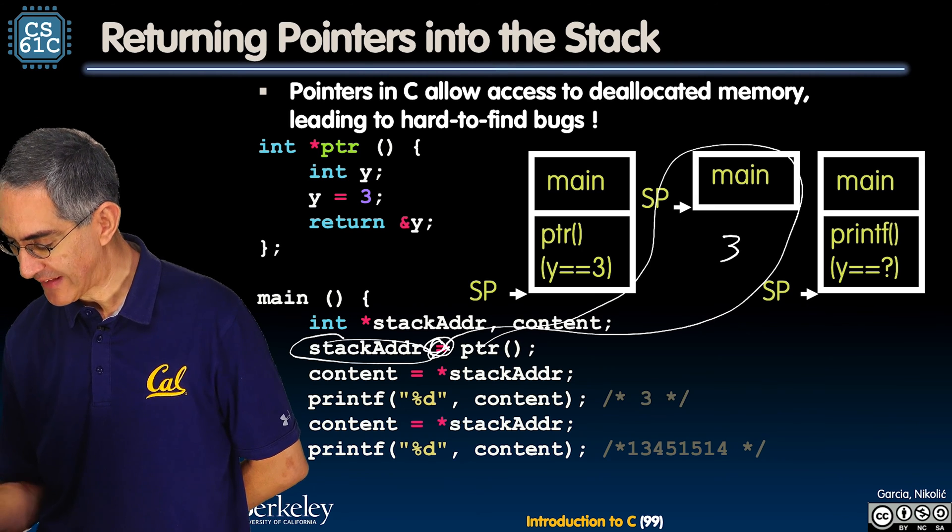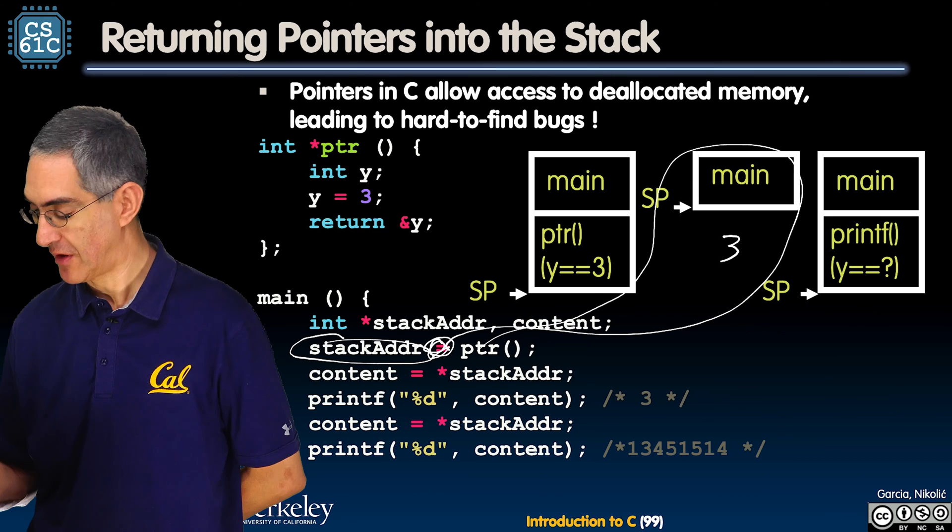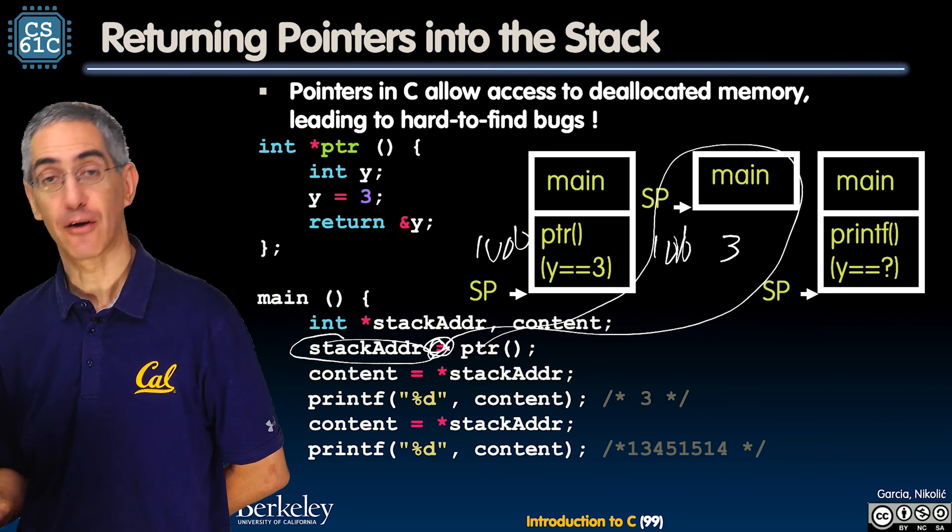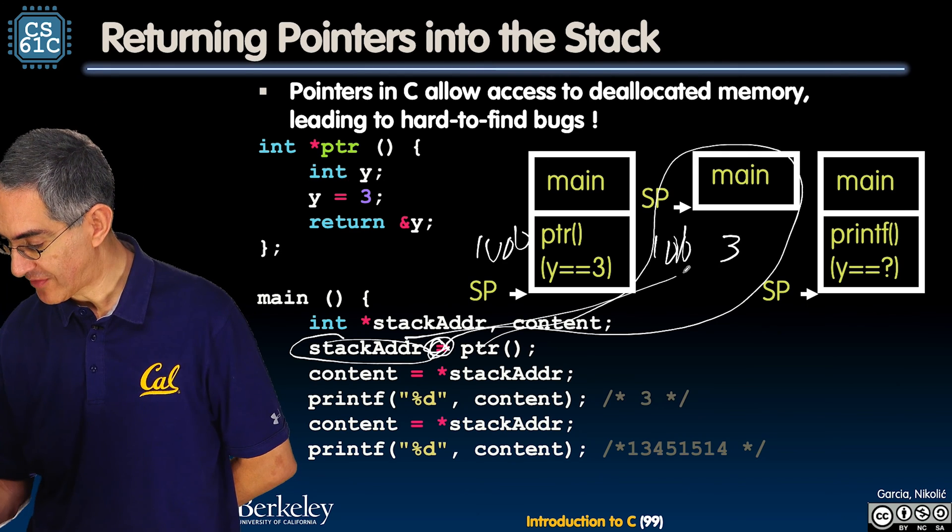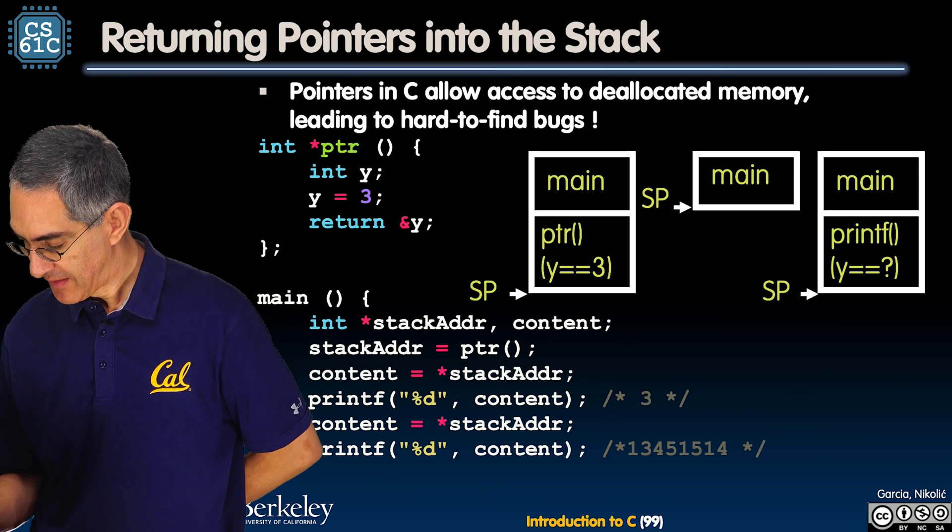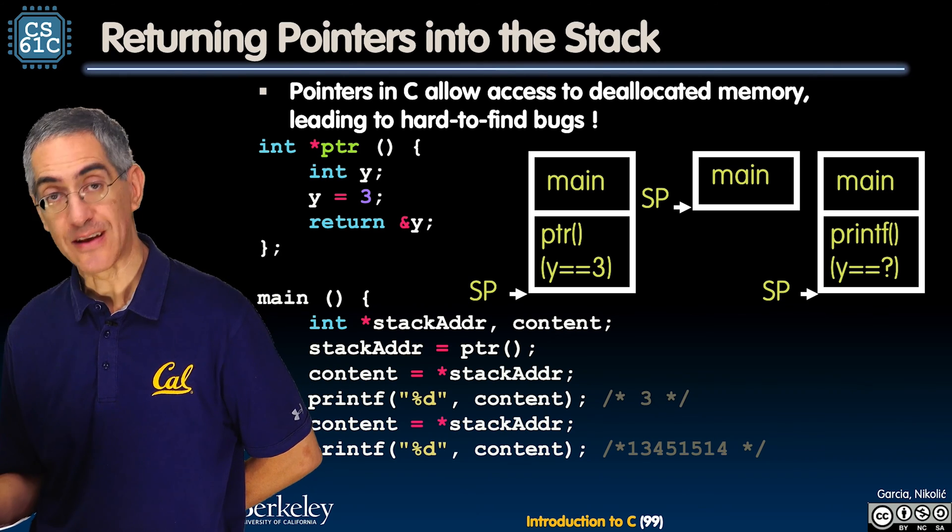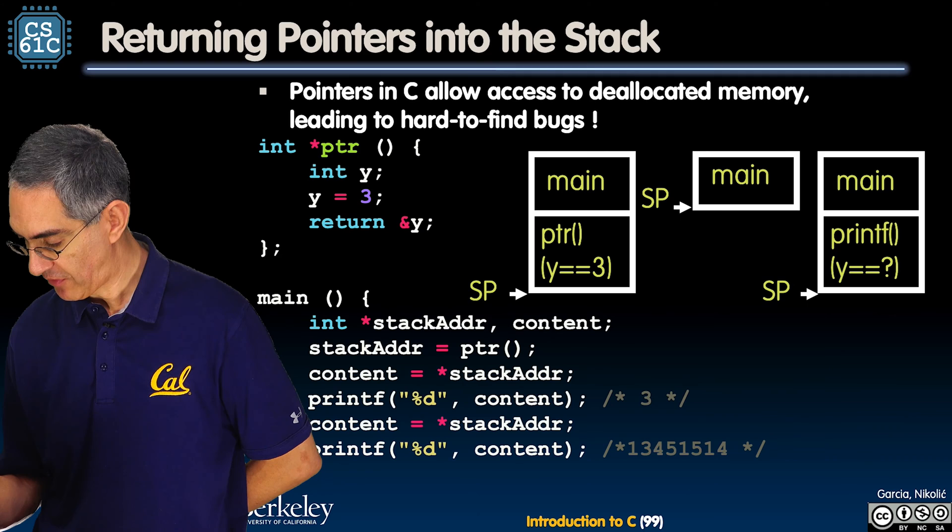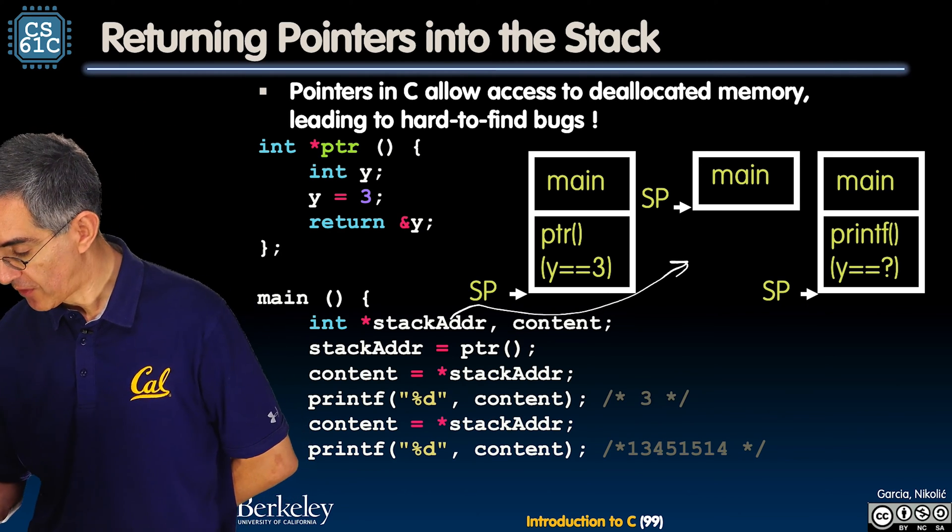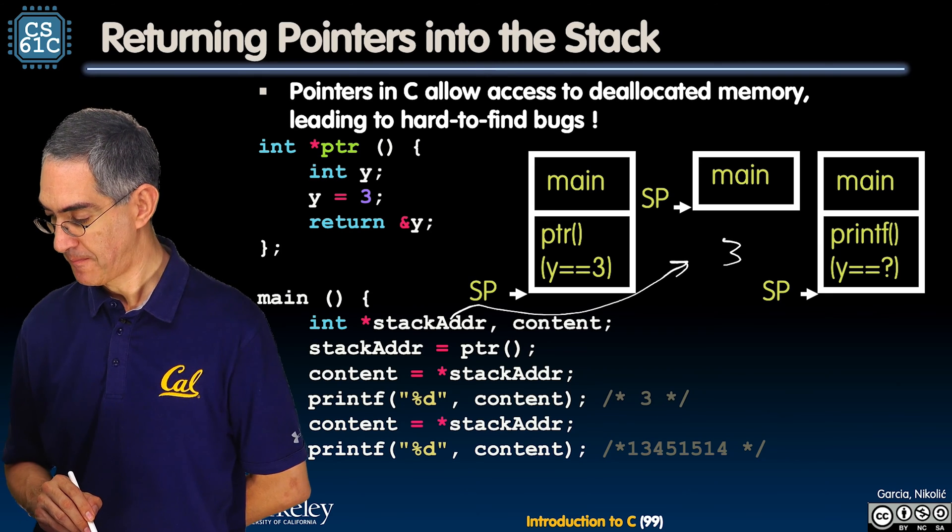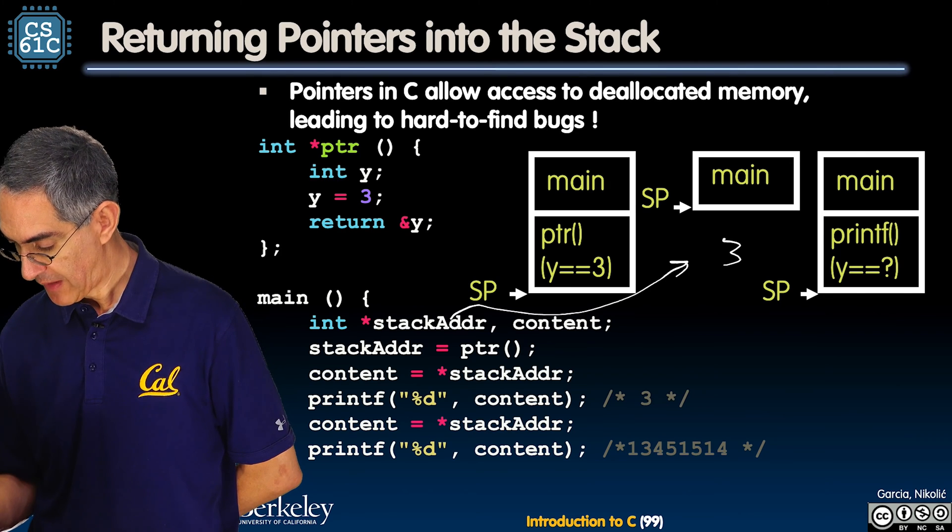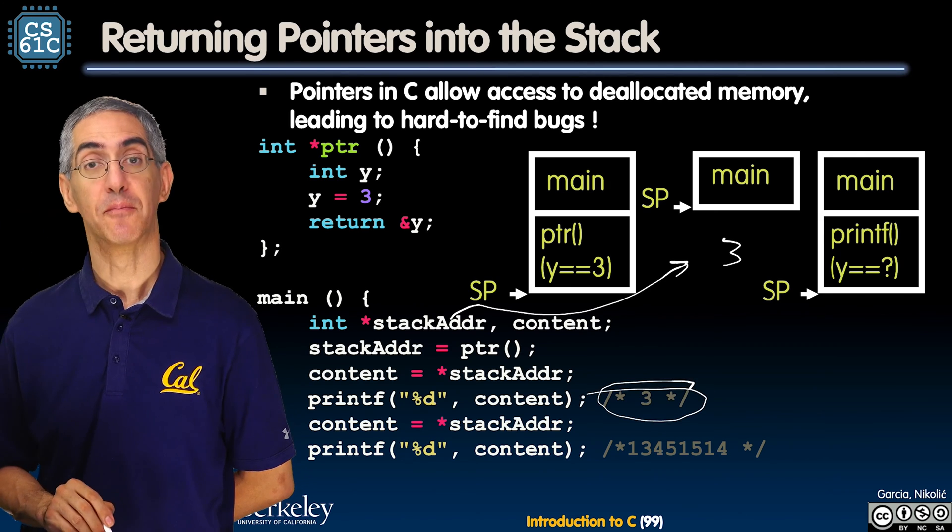Now when that returns at this equal sign, this is what the world looks like. There's no more, that stack frame is gone. It didn't erase, it didn't scrub it, but it's gone. Now really there was a three in here still. So stack address gets the address of that, maybe at a thousand. So stack address points to that spot. Now content equals star stack address. Follow the pointer and set it to content and print it out: three.